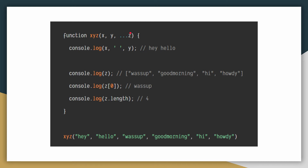When we call the xyz function, the first argument 'hey' gets stored inside x, the second argument 'hello' gets stored inside y, and the remaining four parameters — 'what's up', 'good morning', 'hi', 'howdy' — are packed into an array and assigned to z. Inside the function we first console.log x and y, which outputs 'hey hello'. Then we console.log z, which gives us an entire array of four elements. z[0] gives us the first element, 'what's up', and z.length gives us 4 because four elements are stored in the array z.